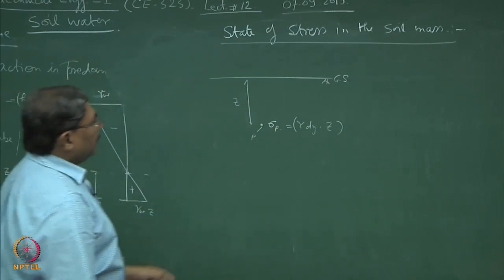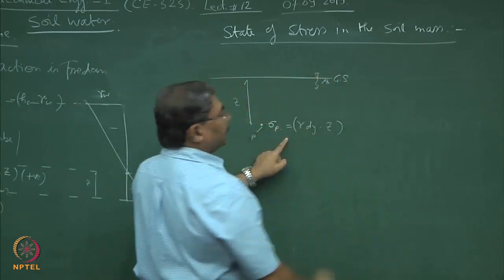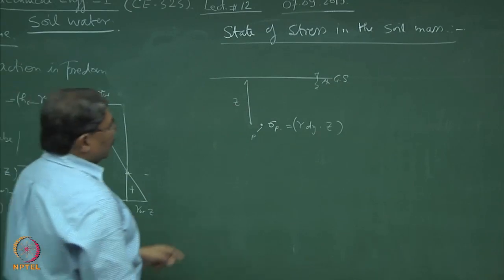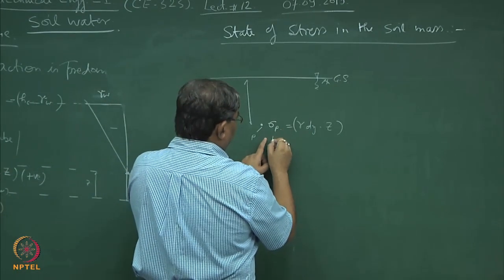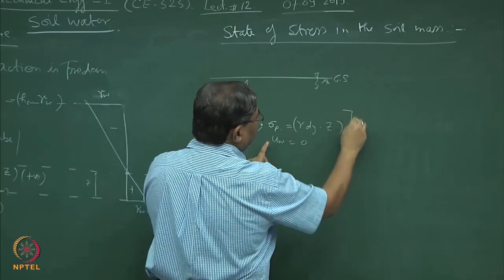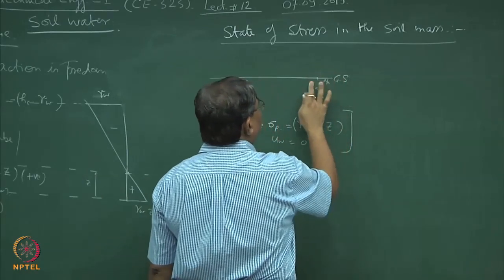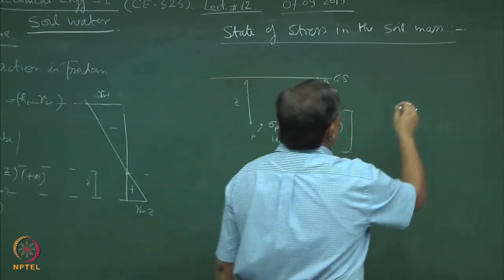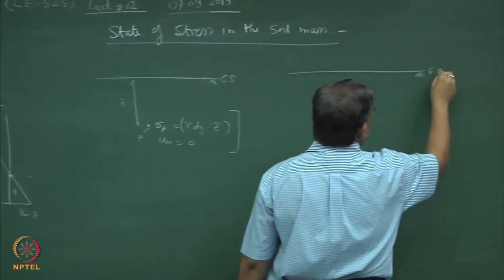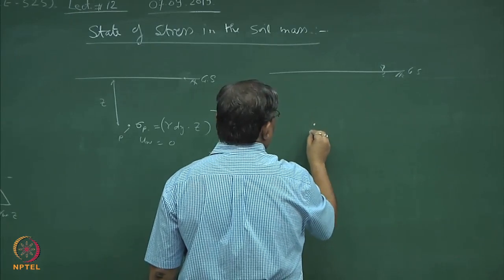Suppose if I say that the water table is also at the surface. In the first case, your pore water pressure is also going to be zero. However, if you have the ground surface and there is a water table, and if I ask you to find out at point P the state of stress at depth z.